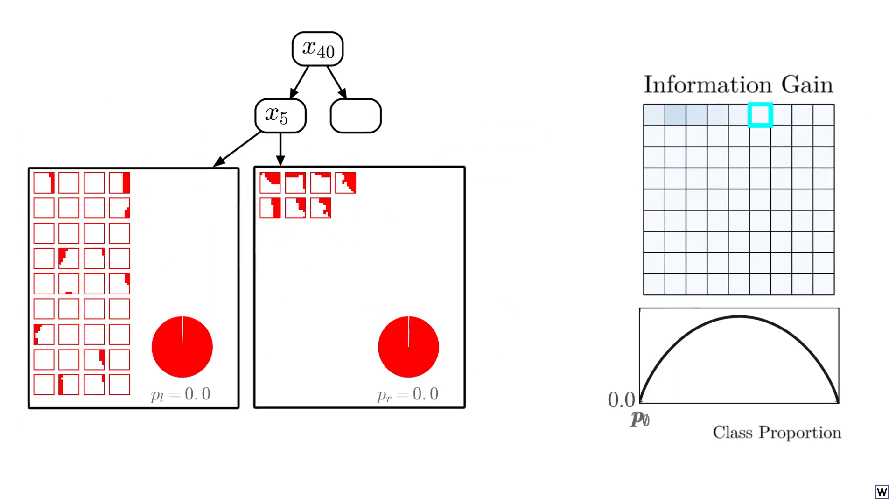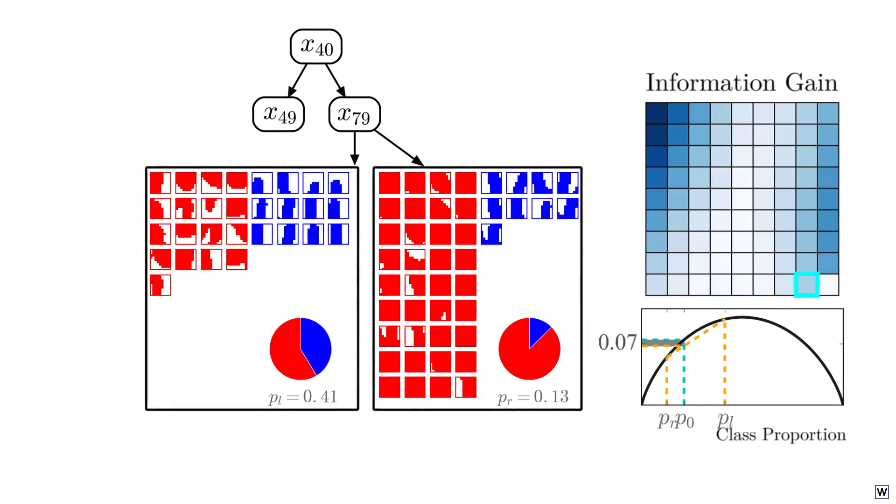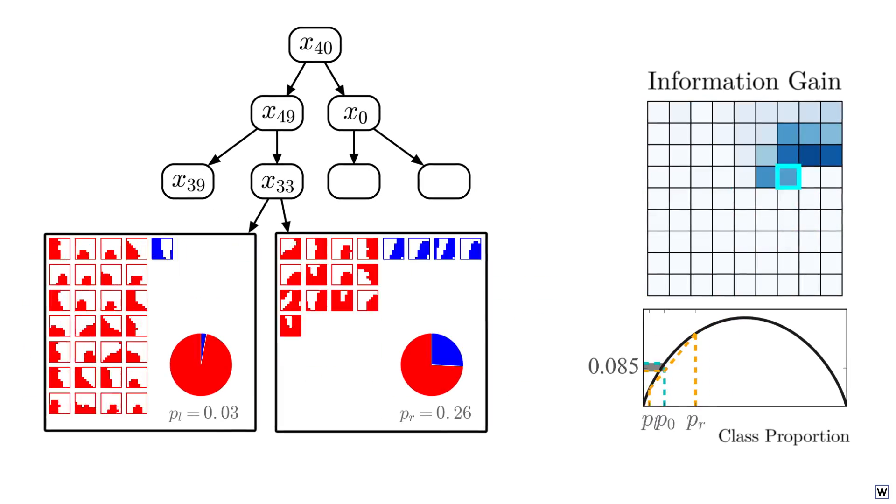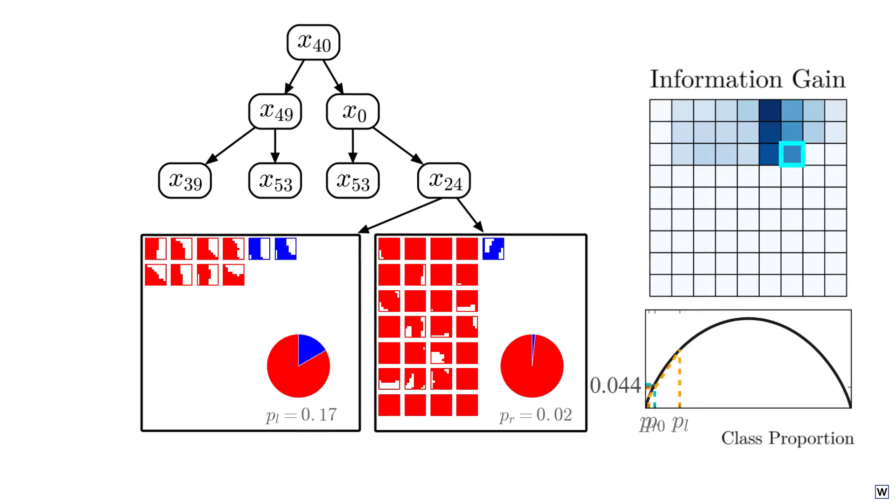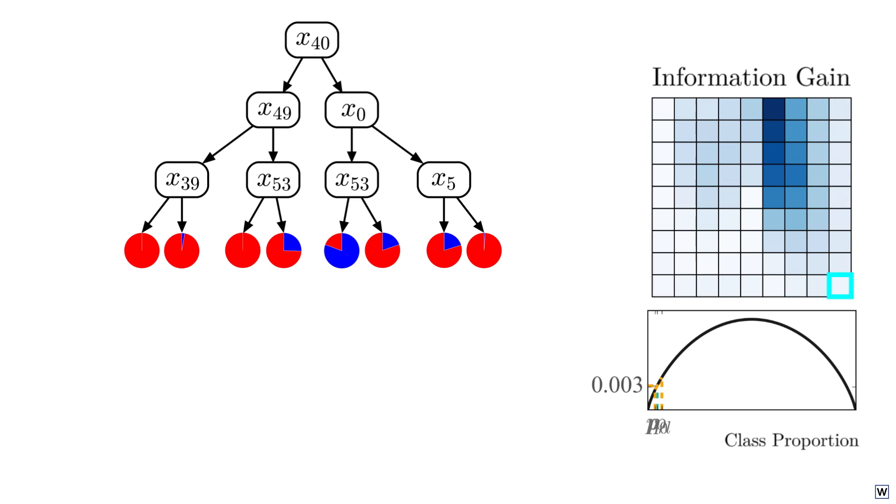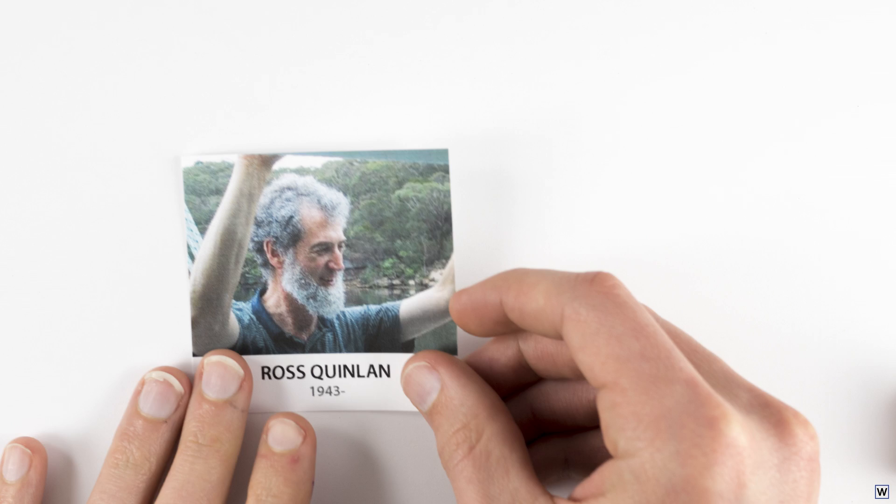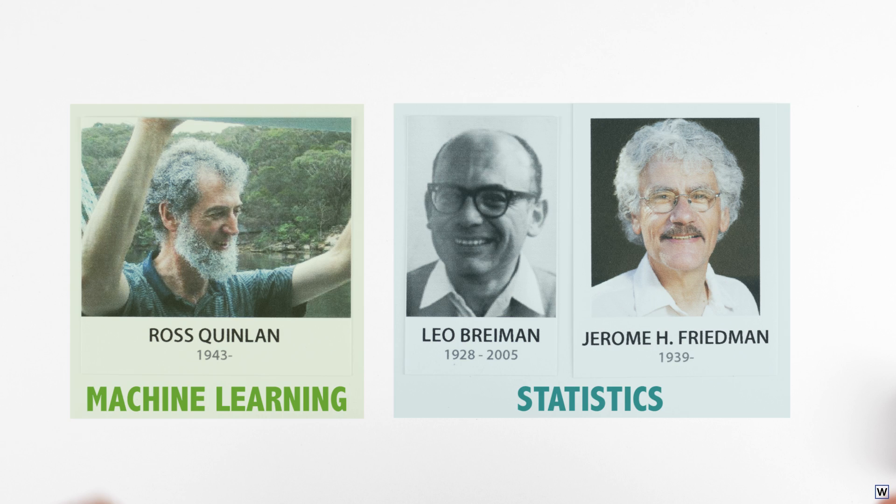What if we could test a tiny fraction of all possible rules, and by judiciously using the information we gain from each test, quickly find a rule that offers the same performance as the rule we found by our brute force approach? Remarkably, a strategy that accomplishes exactly this was uncovered in the 1970s and 80s by several researchers, working independently in the fields of statistics and machine learning.